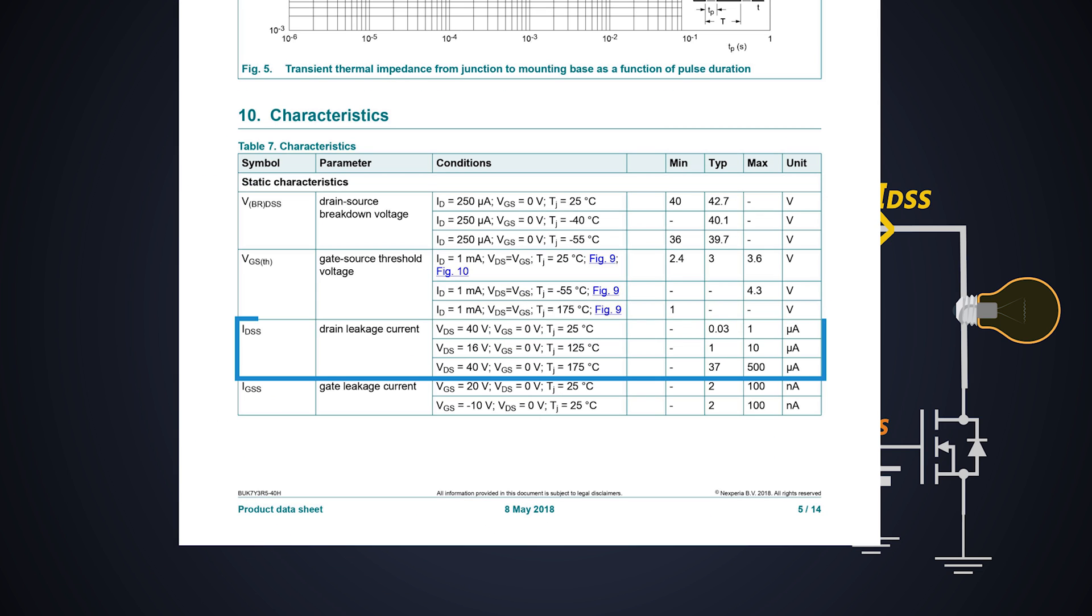For this MOSFET, it typically ranges from few nanoamperes to 500 microamperes with different VDS at junction temperature conditions. So this leakage current depends on the drain to source voltage and junction temperature. When the MOSFET is off and its junction temperature is rising, in that case the leakage current of the MOSFET increases. So its conduction loss increases which eventually dissipates more power.